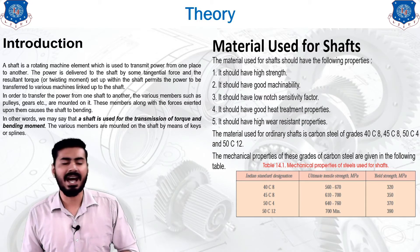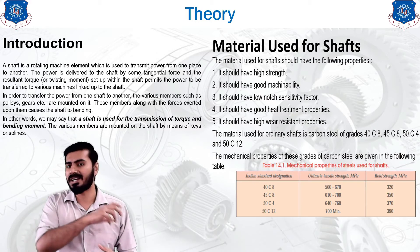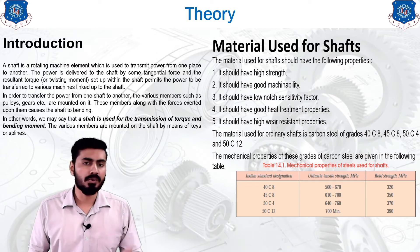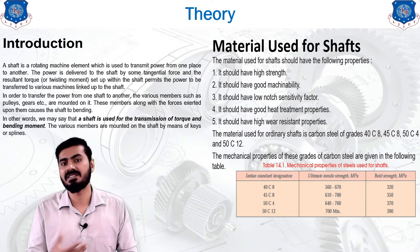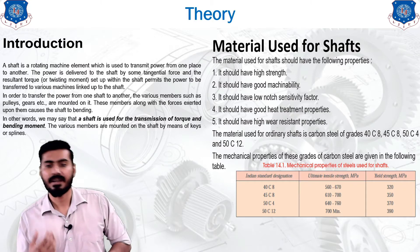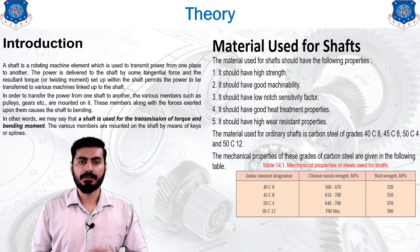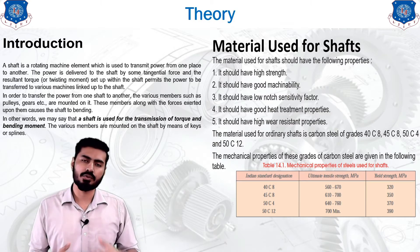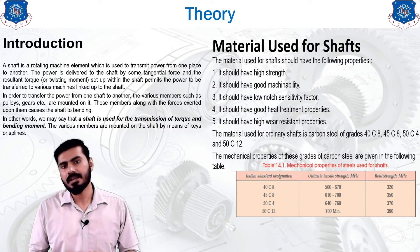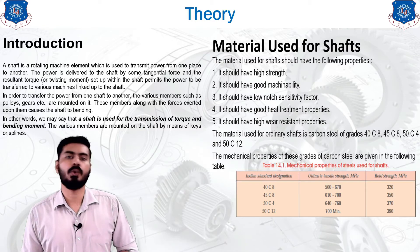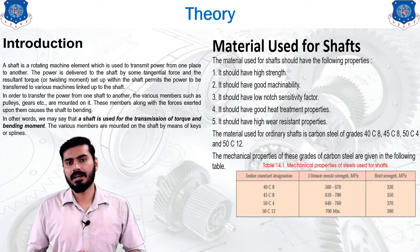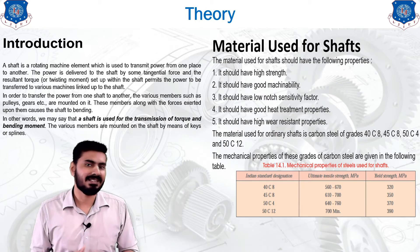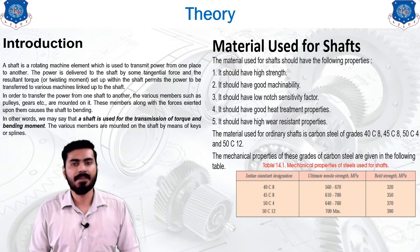Third, the shaft material should have good heat treatment properties or low notch sensitivity factor. Heat treatment properties are vital when transmitting high power or high torque where normal material strength is insufficient — processes like heat treatment and quenching can enhance strength. Fourth, it should have high wear resistance. Without wear resistance, the shaft's life will be shorter, requiring frequent replacement, which disrupts production and increases costs.